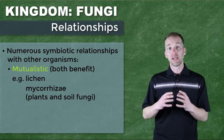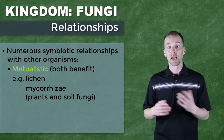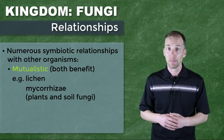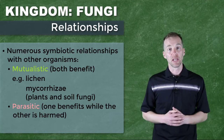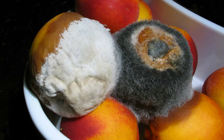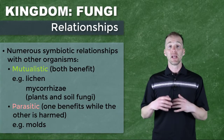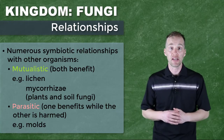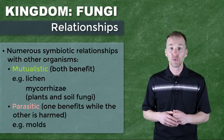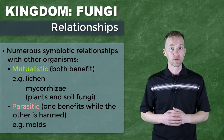Just because there are some mutually beneficial relationships between fungi and plants, it doesn't mean they are all that way. There are some parasitic relationships that exist as well. If you've ever seen fungus growing on a fruit, you'll understand — depending on the year and conditions, it's estimated that up to 50 percent of the world's fruit can be ruined by fungus.